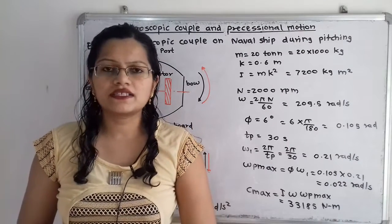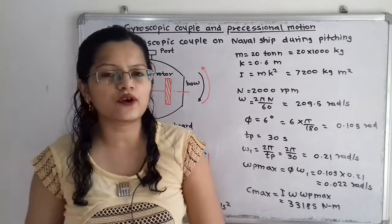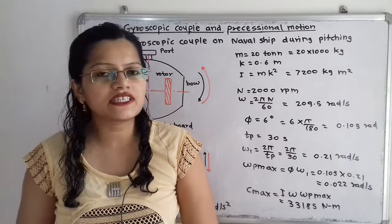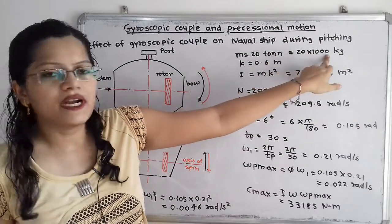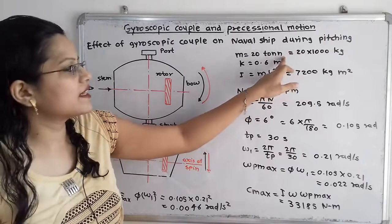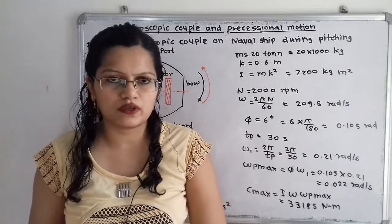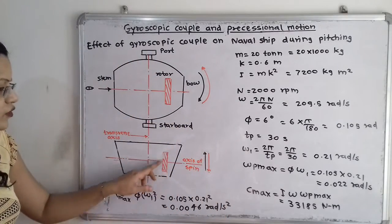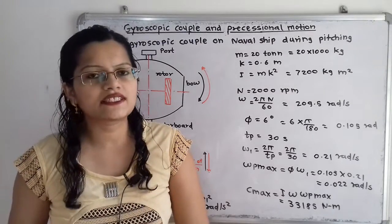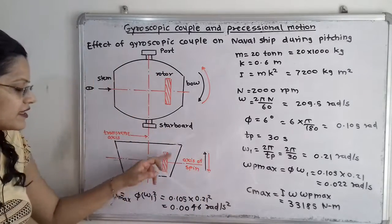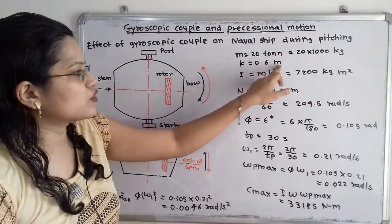Now we will understand the given data with the help of a diagram. The mass of the rotor is 20 tons. Since the standard unit is kilogram, we take 20 × 1000, giving 20,000 kg. Then for the radius of gyration — if we observe the diagram, here is the rotor rotating about the horizontal axis known as the axis of spin. The radius of gyration k is equal to 0.6 meter.